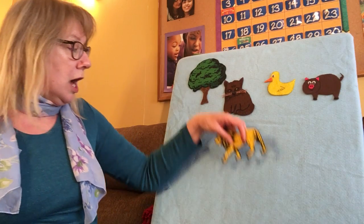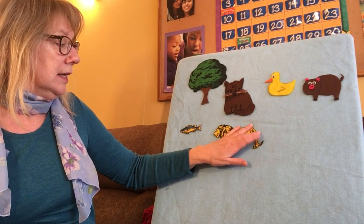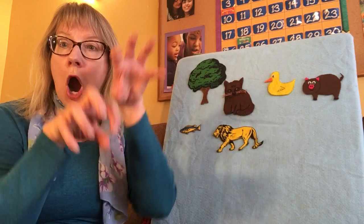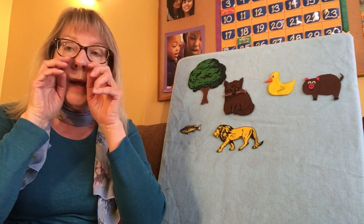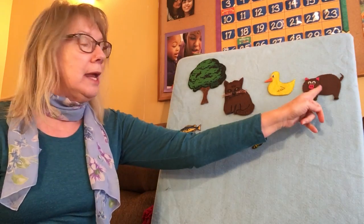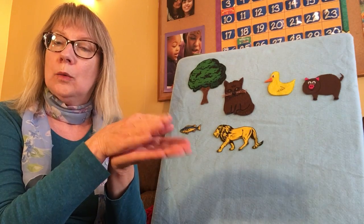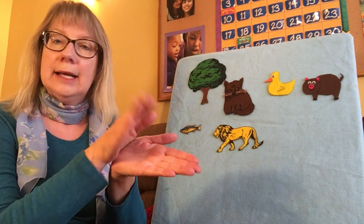Now how about a lion? I had a lion and the lion pleased me. I fed my lion under yonder tree. And the lion went roar. And the fish went oink, oink, oink. And the pig went oink, oink, oink. And the duck went quack, quack, quack. And the cat sang fiddle-eye-fee. Fiddle-eye-fee.